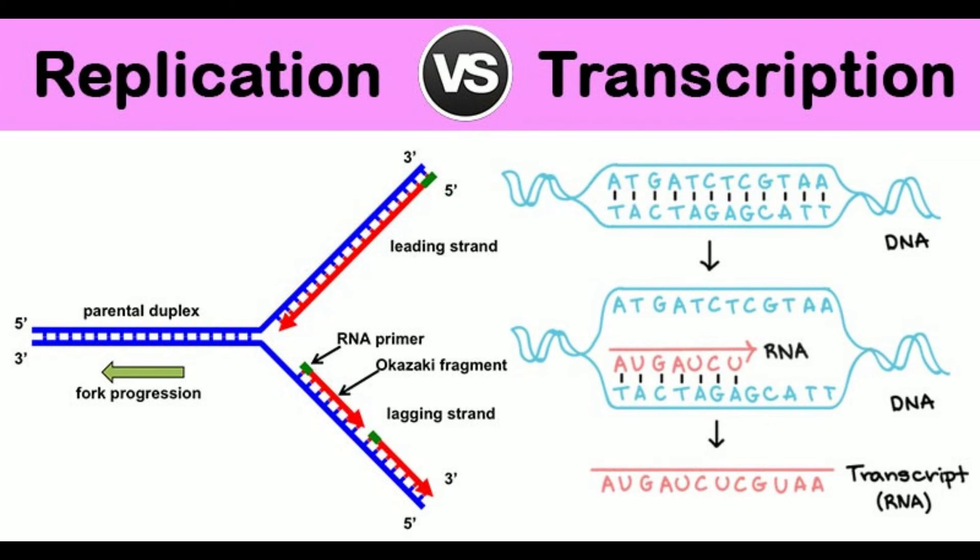15. Strands in product: double-stranded DNA versus single-stranded RNA. 16. Post-formation: joining of Okazaki fragments in replication versus RNA editing in transcription.